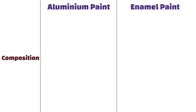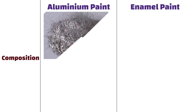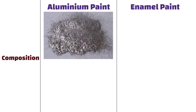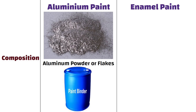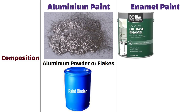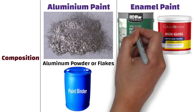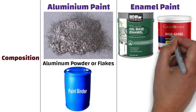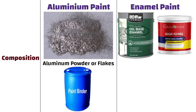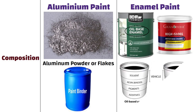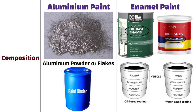Composition. Aluminum paint is primarily made of aluminum powder or flakes mixed with a suitable binder. On the other hand, enamel paint is an oil-based or water-based paint that contains pigments, binders and solvents.